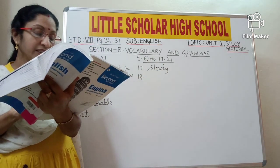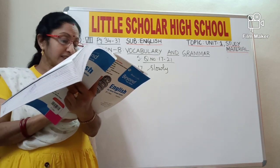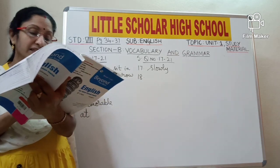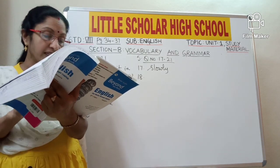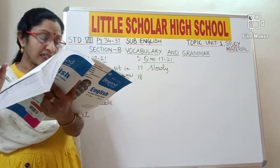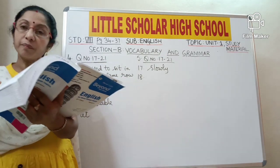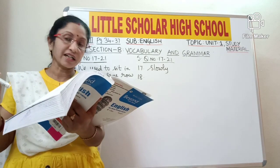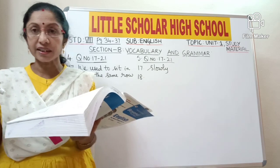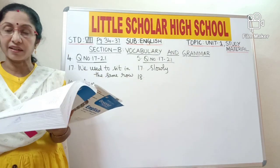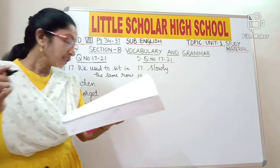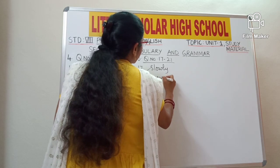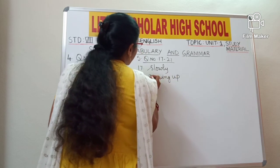Question number 18: 'Screwing up her eyes peered into the darkness.' Pick out the phrase which means 'narrowing' from the underlined sentence. A phrase is a group of words which doesn't have complete meaning. She narrowed her eyes to look into the darkness. The phrase 'screwing up' means 'narrowing'.